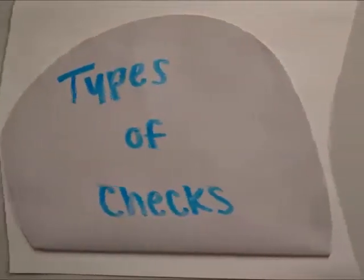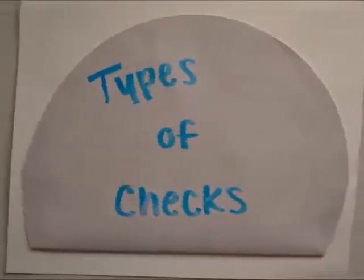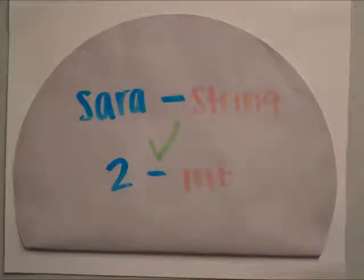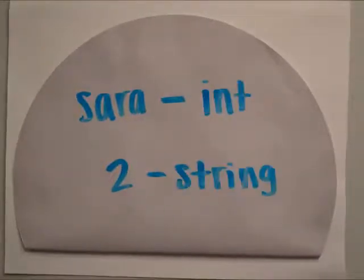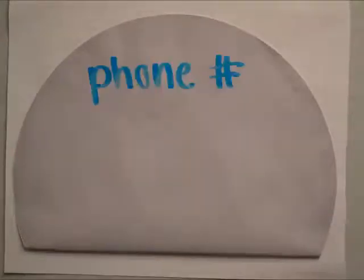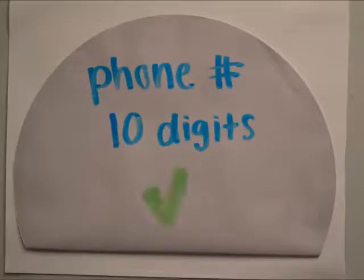There are many different types of data checks. Type checks ensure that variables are the appropriate data type. Some examples of type checks are making sure that names are alphabetic and age is numeric, not the other way around. Length checks confirm that variables are the appropriate length. For example, your phone number should only have 10 digits, no more or no less.